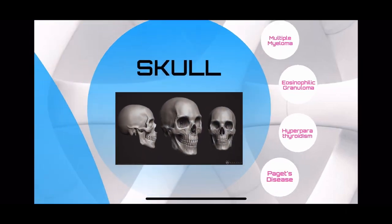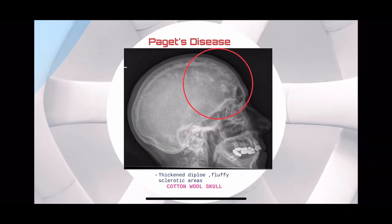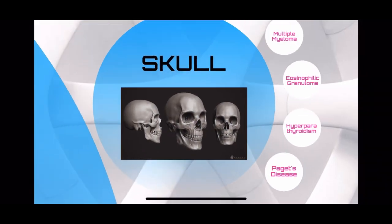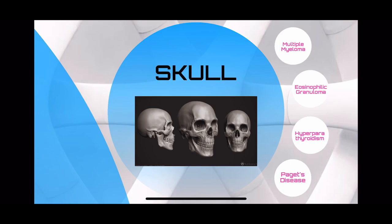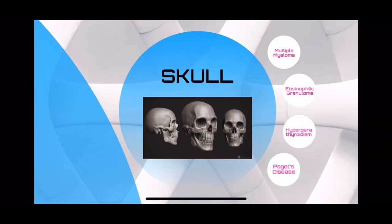In Paget's disease, you get thickening of the diploe with fluffy sclerotic areas, called a cotton wool skull. So a skull X-ray makes you think of four things.